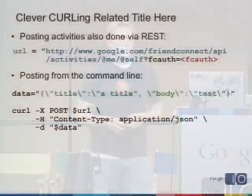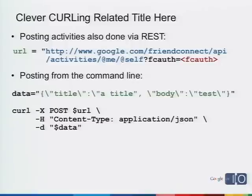To show how easy it is to post an activity, here's a simple REST call using curl. Following the OpenSocial API model, it's slash activities slash me slash self. You put in the FCAuth token, then post a JSON object to the activity API — you give it a title, give it a body, and run the curl command. Curl posts it, and that's it. That's all you have to worry about.